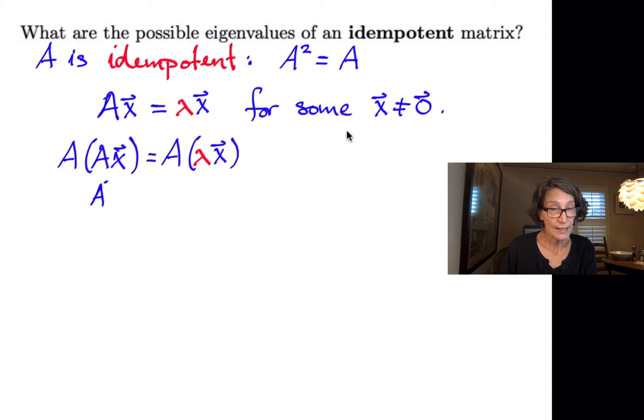On the left, we can rewrite that as A squared times X. And on the right, using properties of matrix multiplication and scalar multiplication, we can pull the scalar out and call that lambda times A times X. Now, on the left, we have an A squared, so we can just write that as A times X.